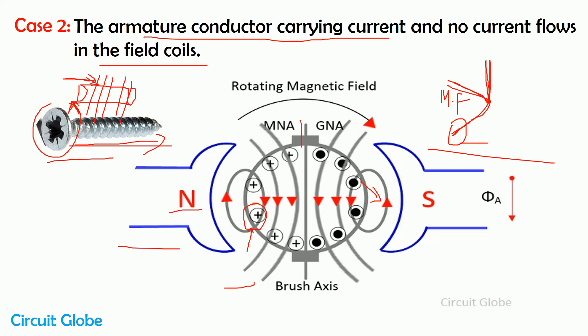Suppose under the north pole, these are the conductors. These conductors combine their magnetomotive force due to current and try to produce flux in the downward direction. Similarly, the conductors under the south pole also add their magnetomotive force, inducing flux also in the downward direction. So in short, both sets of conductors try to induce flux in the downward direction of the DC generator.